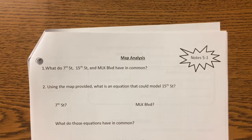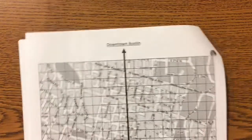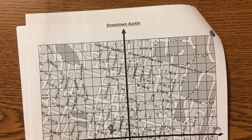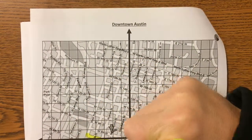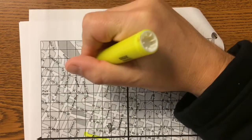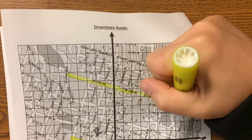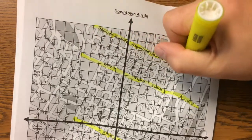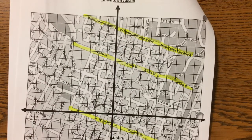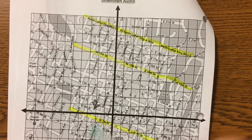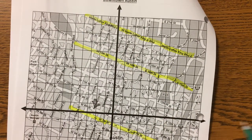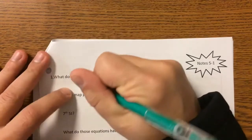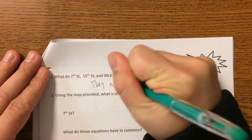How are these streets similar — what do they have in common? 7th, 15th, and MLK. Let's take a look. Here's 7th, here's 15th, and here's MLK. A couple of you have already answered this, but now that you see them highlighted, what do you notice about those three streets? They're all parallel, right? This is how downtown is mostly organized — with parallel and perpendicular streets. Today we're going to focus on the parallel ones.